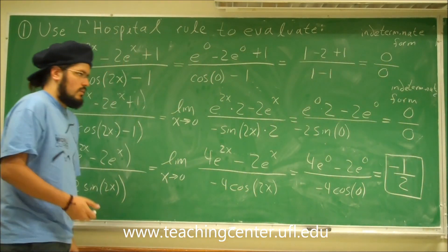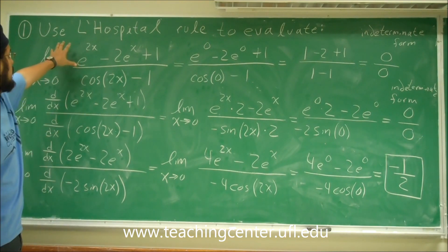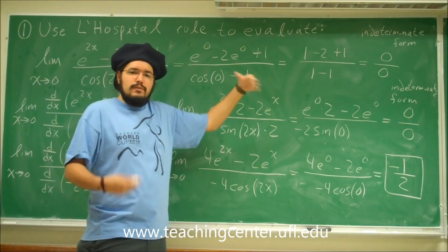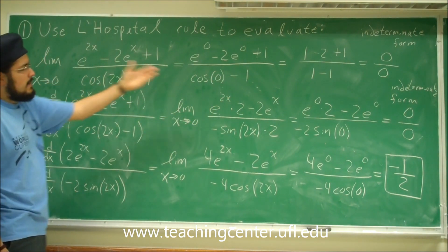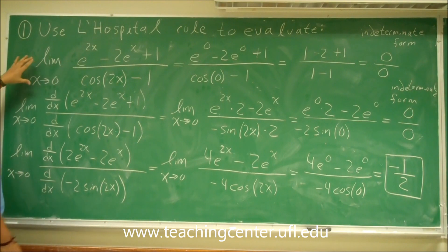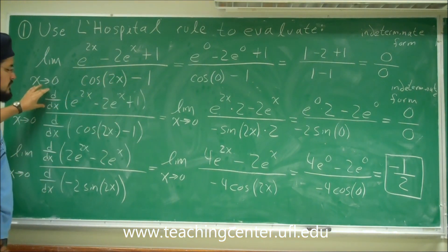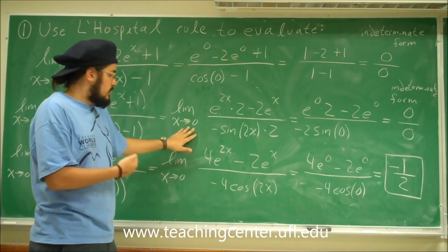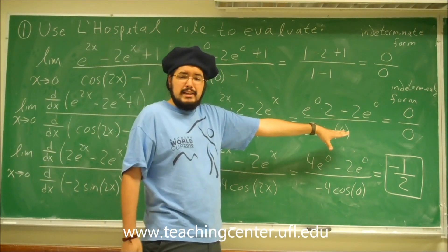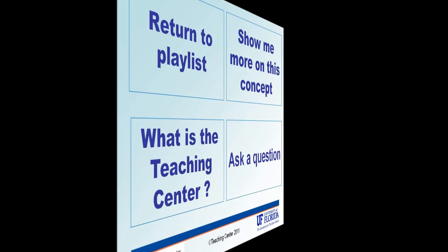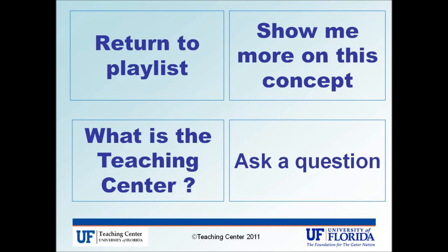And that is the final answer: negative one half. Quickly, let's go over this again. We want to use L'Hôpital's rule to evaluate this limit. In order to use L'Hôpital's rule, you must have an indeterminate form of 0 divided by 0, or infinity divided by infinity. We plugged in 0 and got 0 over 0, which is the right indeterminate form. L'Hôpital's rule states: take the derivative of the numerator and divide it by the derivative of the denominator, then plug in the limit. If you get another indeterminate form, keep applying L'Hôpital's rule until you get something that's not indeterminate.